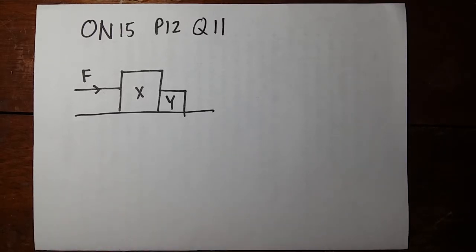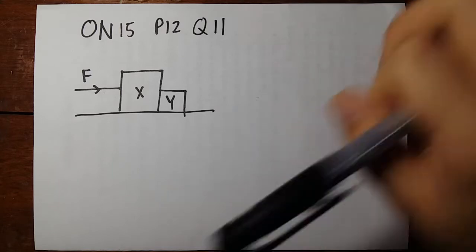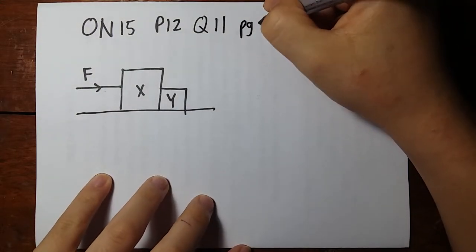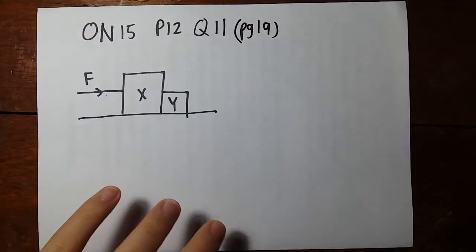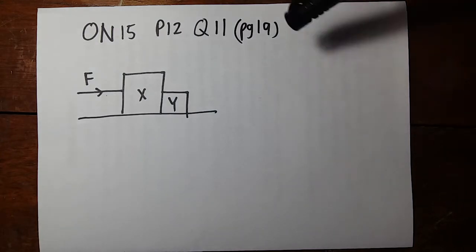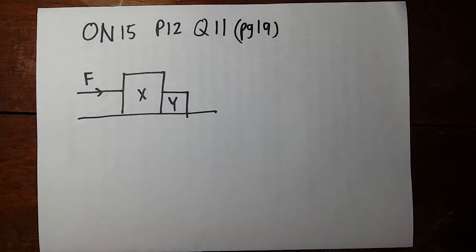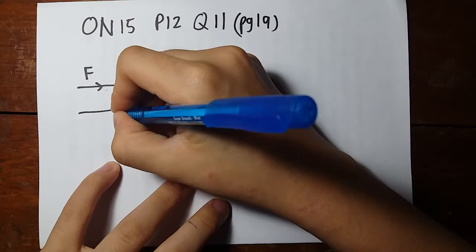Okay, this question is the two blocks question also on page 19 if you have the handout. So we've got two blocks on a frictionless surface. Frictionless is kind of important to note down.